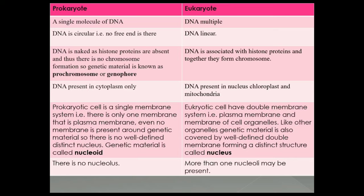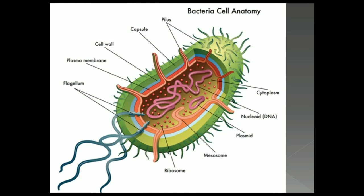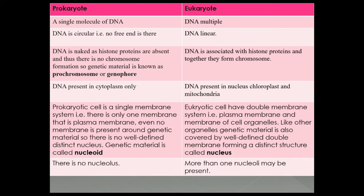The second point is that DNA is circular in prokaryotic cells — there is no free end. Circular doesn't mean that it is present in the form of a perfect circle, but if it is spread out, it can form a circle. It is present in the form of a loop, as observed in this diagram, labeled as nucleoid or DNA. In the case of eukaryotic cells, as discussed, there are multiple DNA threads, and each thread is linear — their ends are not fused together.